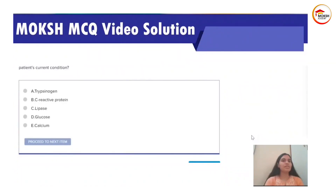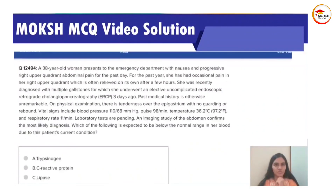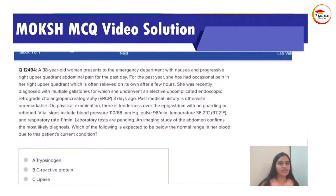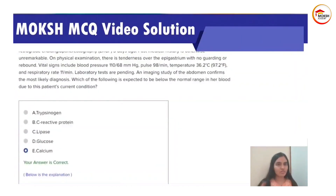The answer options are: A) trypsinogen, B) C-reactive protein, C) lipase, D) glucose, and E) calcium. Reading the question, the key point is that the patient underwent ERCP three days ago — this should bring to mind post-ERCP pancreatitis as a complication. One thing to note: the question stem does not have classic active pancreatitis symptoms, which would usually be epigastric pain radiating to the back. Here the patient has nausea and progressive right upper quadrant pain, which could be confusing. But looking at the options — trypsinogen, CRP, lipase, calcium — connecting the post-ERCP state with these options, your mind should go toward acute pancreatitis.